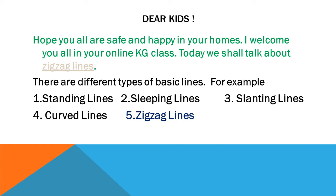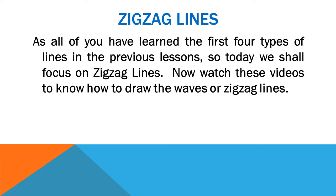We shall talk about zigzag lines. There are different types of basic lines — for example, standing lines, sweeping lines, slanted lines, curved lines, and zigzag lines. As you have learned the first four types of lines in the previous lesson, today we shall focus on zigzag lines. Now watch these videos to know how to draw waves or zigzag lines.